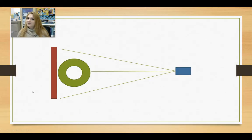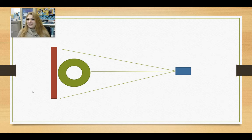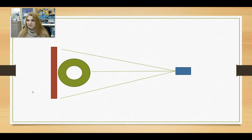When talking about something being divergent, I'm not talking about Theo James. What I'm talking about is the x-ray beam itself and how the x-rays are behaving in relation to the patient. So in this homemade drawing made in PowerPoint,